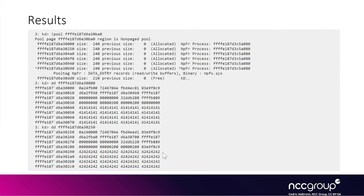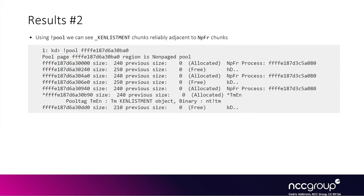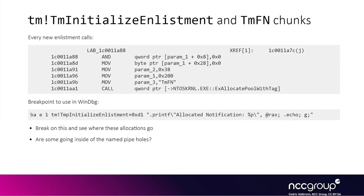Those values correspond to the A's written into the first pipe and the B's written into the second pipe. After the named pipe writes are alternating in memory, we can read the data from the second named pipe to create the holes we want. After reallocating the holes with k enlistments, we can see that one k enlistment got allocated right after a named pipe, which is exactly what we want. For every enlistment created, a notification chunk with the tmfn tag is also allocated, and we can use a breakpoint to track where these go and check if they interfere with our feng shui.